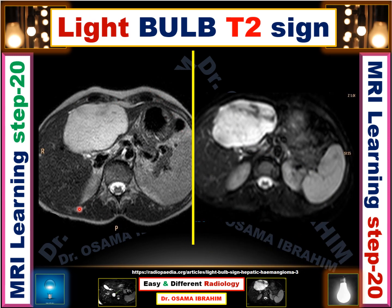This is the ordinary T2 and this is the heavily T2. As we see here, there is marked darkness around the abnormal high signal lesions appearing here, compared with this ordinary T2.